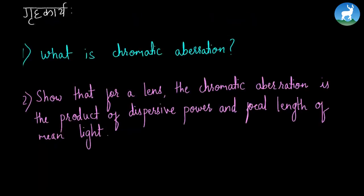Today's homework questions are: 1) What is chromatic aberration? 2) Show that for a lens, the chromatic aberration is the product of dispersive power and focal length of the mean light.